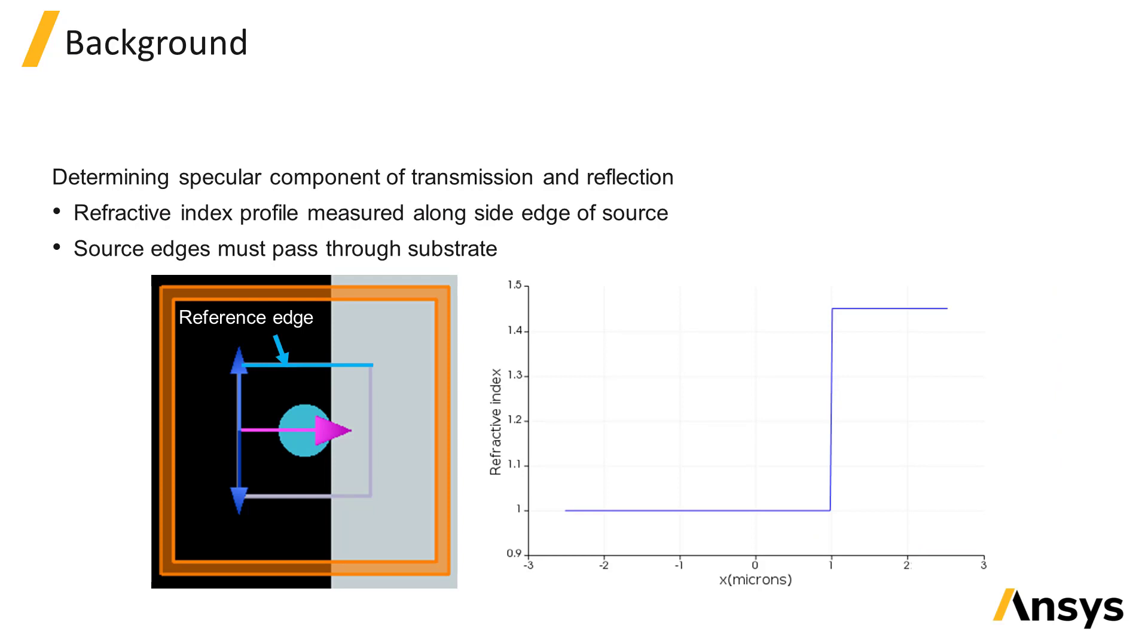When there is a substrate, any light which is directly reflected or transmitted through the substrate gets subtracted at the boundaries. The source is able to determine what portion of the fields correspond to directly transmitted and reflected light by using one edge of the source as a reference edge, illustrated by the yellow line in the image here.